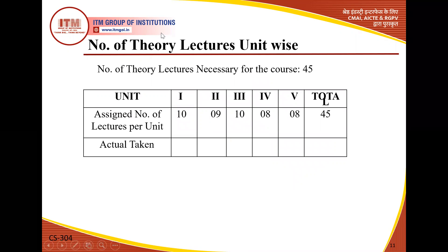Regarding the number of theory lectures required unit-wise: approximately 10 lectures are needed initially for basic concepts, then 9 and 10 lectures for the second and third units, and 8 lectures each for units four and five — approximately 45 lectures total to complete the syllabus.